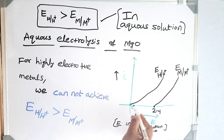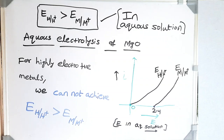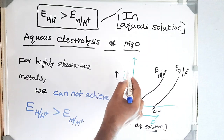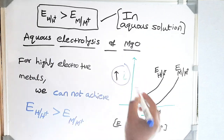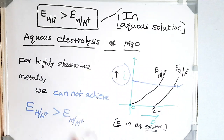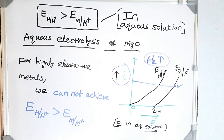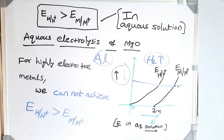If we plot the overpotential against current density, the hydrogen overpotential curve and the metal deposition curve are shown. For highly active metals, the electropositive nature of magnesium is very high — the electrode potential of magnesium in aqueous solution is −2.4 volts. By applying any amount of current, we are not able to make these two curves intersect. For any current density, the electrode potential of the metal is greater than that of hydrogen, so on passing electricity, hydrogen evolution takes place and there is no metal deposition.